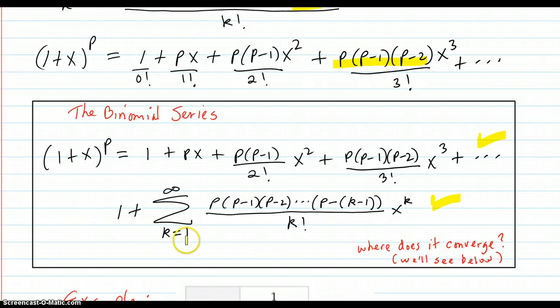Can't start at k equals 0 on this form because k equals 0 makes this be p plus 1, and that doesn't work out with what we have up here. But that's okay. So the question is, where does it converge? And we'll see that below. So we won't worry about that yet.